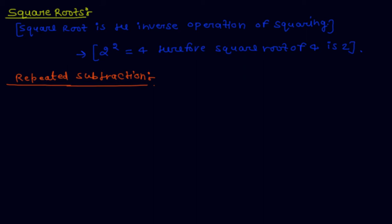In this method of repeated subtraction, we know that the sum of first n odd natural numbers is n². So every square number can be expressed as a sum of successive odd natural numbers starting from 1.